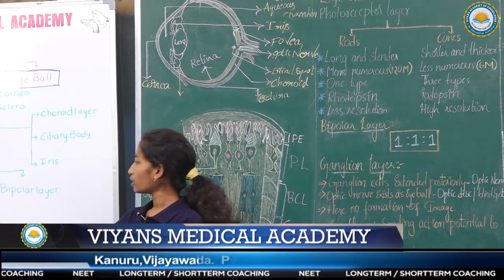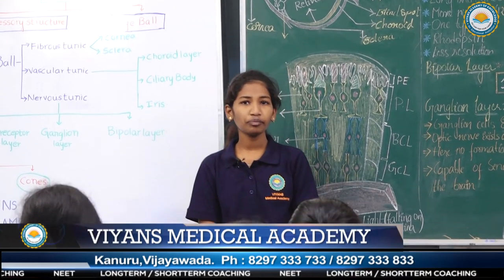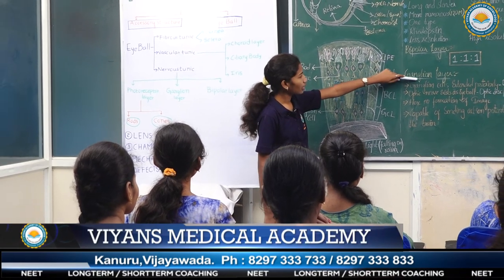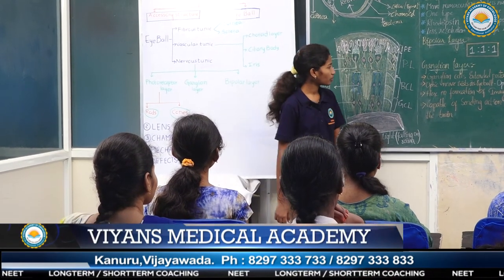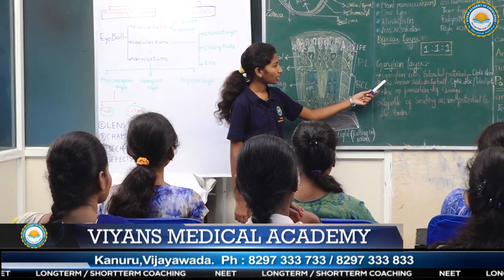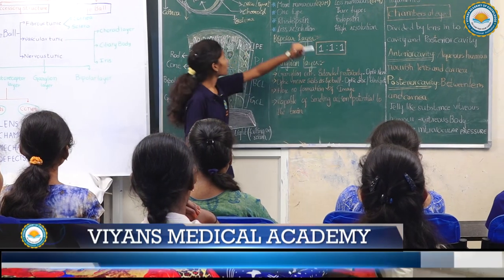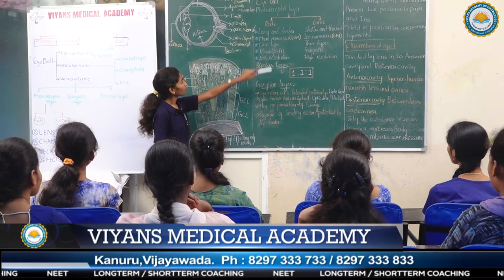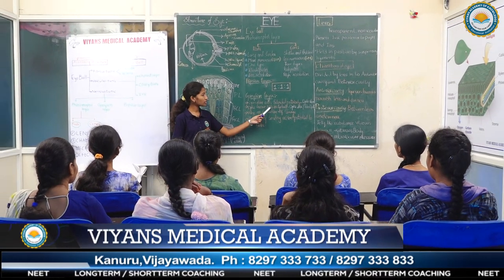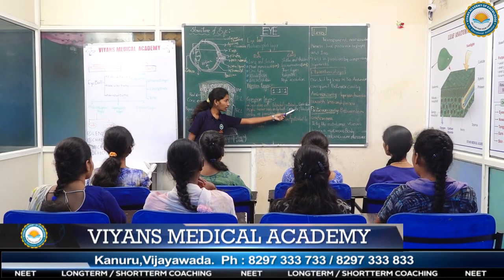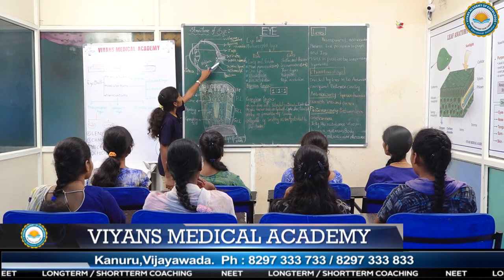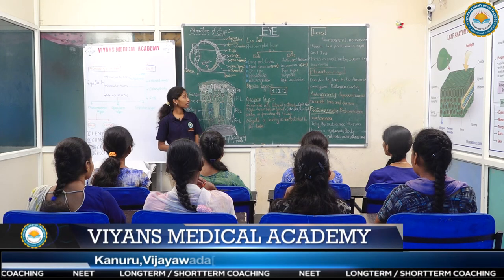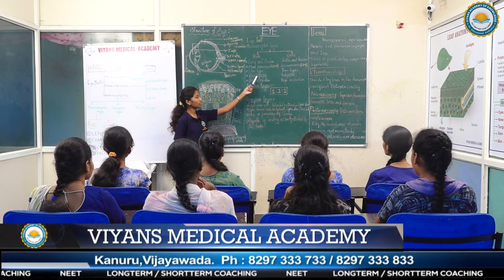Coming to the bipolar cell layer, the relationship between the bipolar cell layer and ganglion layer is 1:1:1. Ganglion cells extend posteriorly and are known as the optic nerve. The optic nerve exits the eyeball at the optic disc, also known as the blind spot. No image is formed at the blind spot because only cones are present and rods are absent.